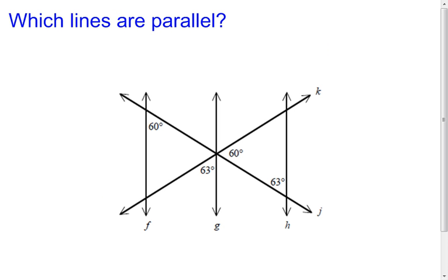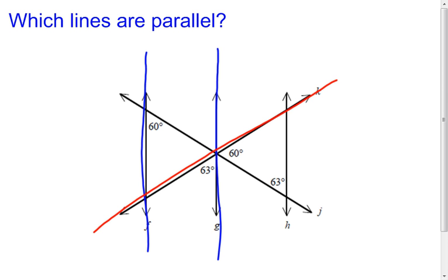Now we have another example that's very similar — figuring out which lines, or maybe all three, are parallel. We'll do it the same way, but this time we might have to switch transversals. First I'll look at line f and line g and decide which line to use as the transversal. If I use line k, I know nothing about the angles there, so that's not a good pick. Let's try line j as the transversal instead.